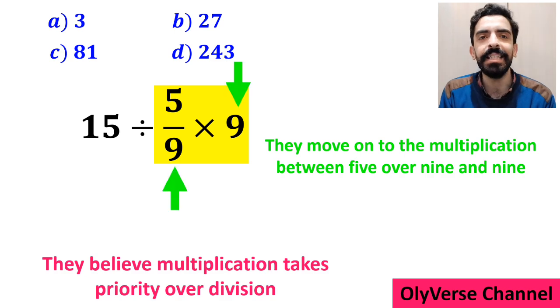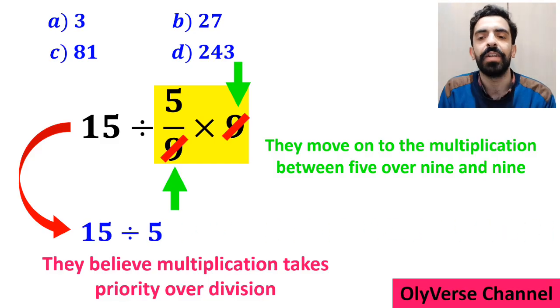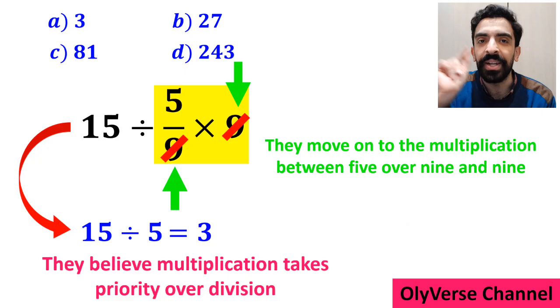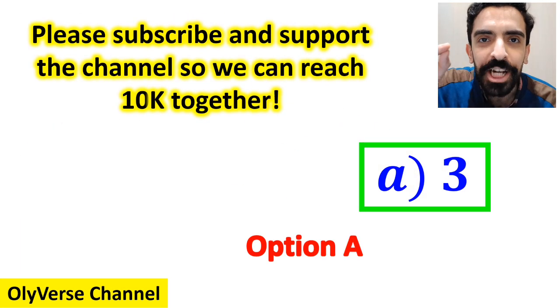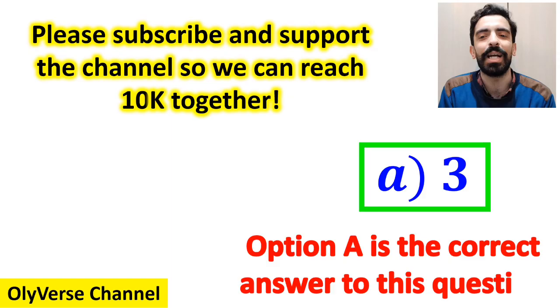As you can see in the image they simplify the number 9 with the 9 in the denominator and instead of the original expression they write 15 divided by 5 which finally gives them the answer 3. And immediately they conclude that option a is the correct answer to this question.